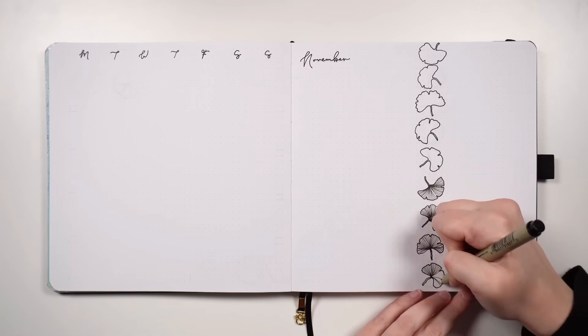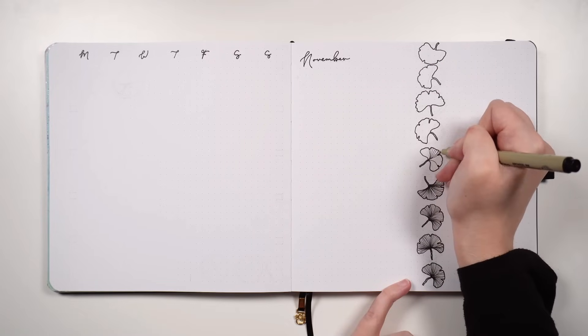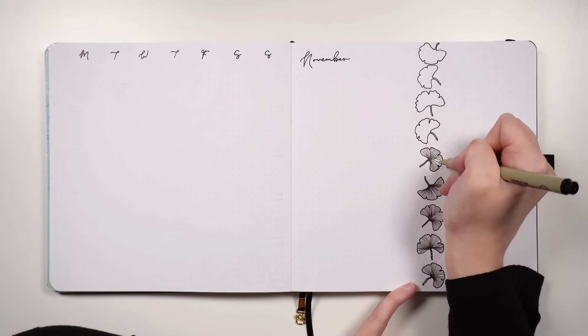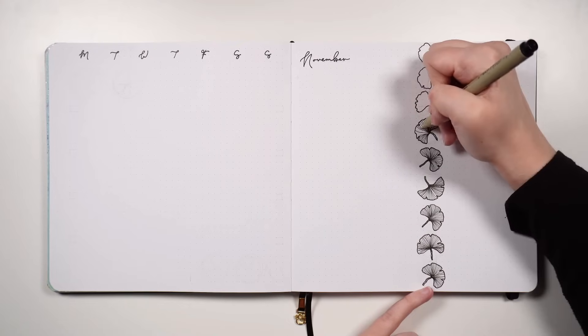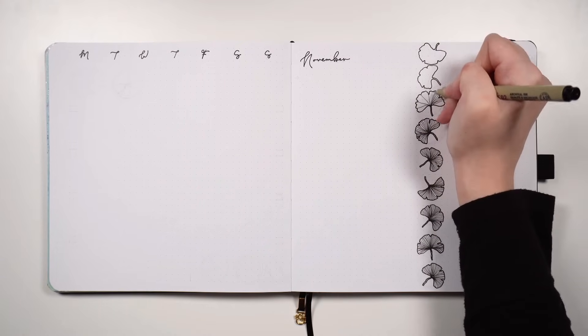When pairing a leaves slash trees theme with November, your first thought might be autumn or fall, but in New Zealand it's actually spring, so I wanted to make sure that with this setup I wasn't using typically autumnal colours. Instead, I went with the classic combination of black and gold, where the gold primarily came from my gold watercolour paints.